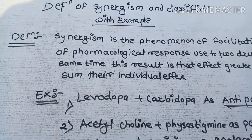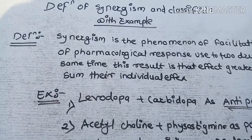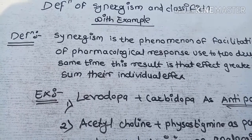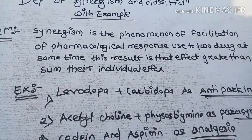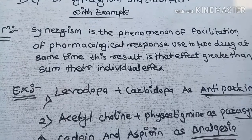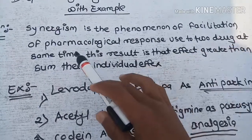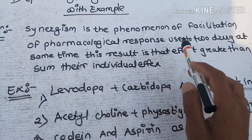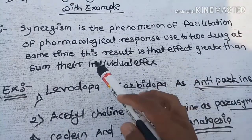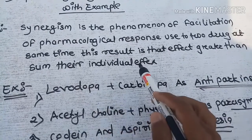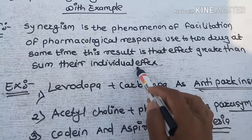Hi friends, my name is Prashant. Today's topic is the definition of synergism, its classification, and examples. Synergism is the phenomenon of facilitation of the pharmacological response where two drugs used at the same time result in an effect greater than the sum of their individual effects. This is the definition of synergism.